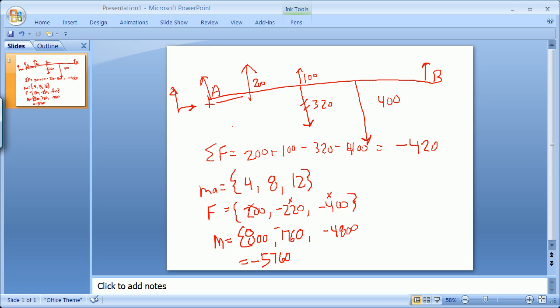Now what we know is that we can get the moment arm of the sum system by taking minus 5,760, which is the sum of the moments, divided by the sum of the forces, which we said was minus 420. And we get some resultant out here, I think it's about someplace at that point. So that becomes your ultimate resultant.